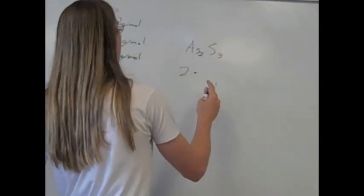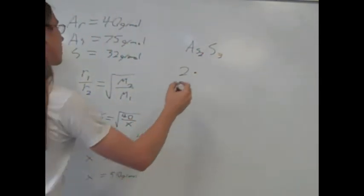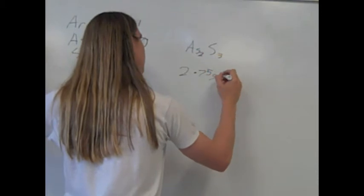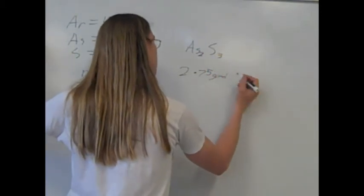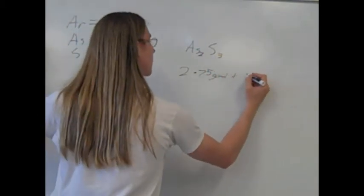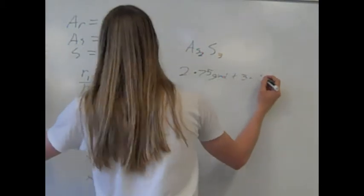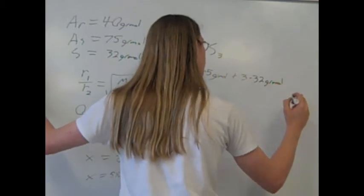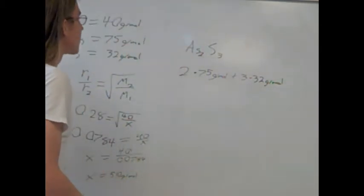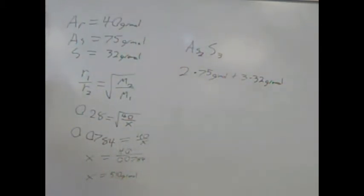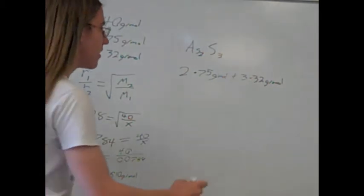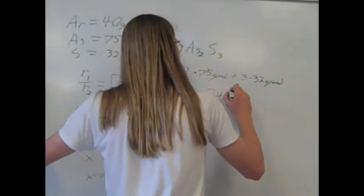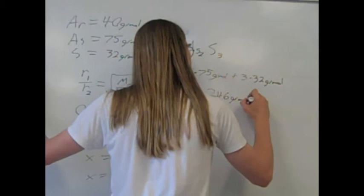2 times arsenic's molar mass of 75 grams per mole, plus 3 times sulfur's mass of 32 grams per mole, which gives us a total empirical mass of about 246 grams per mole.